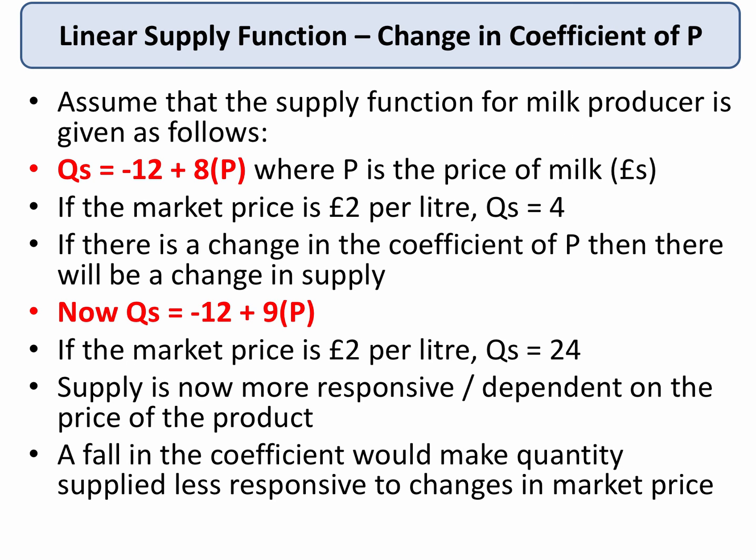We can also bring about a change in the coefficient. Assume this is a milk producer with supply function minus 12 plus 8P, where P is the price of milk. At a price of £2 per litre, the milk producer will supply 4 units. If there's a change in the coefficient of P, there'll be a change in supply. Now assume supply is more responsive to price — instead of 8 times the price, supply is now 9 times the price. At that market price of £2 per litre, the quantity supplied now goes up to 24.